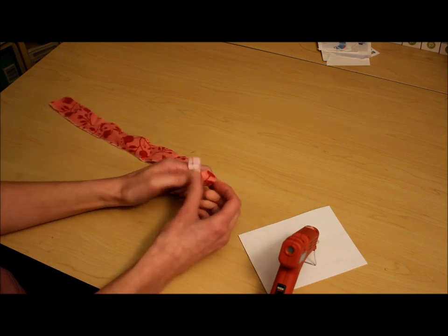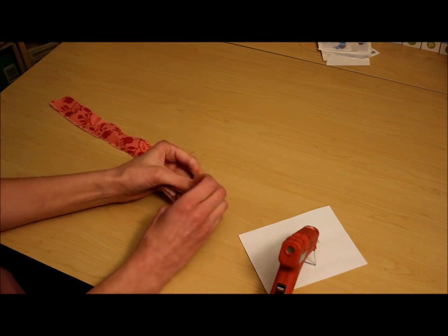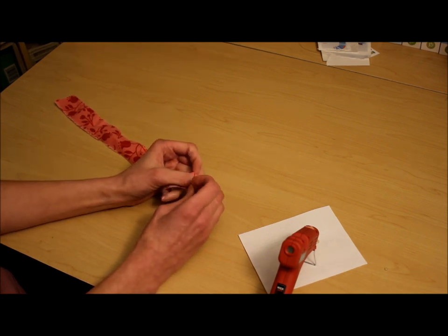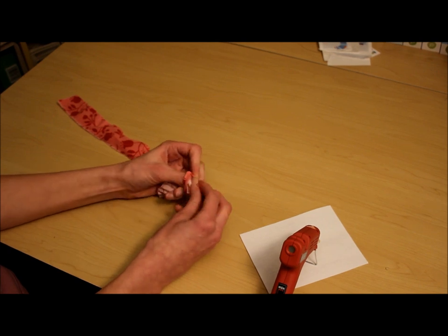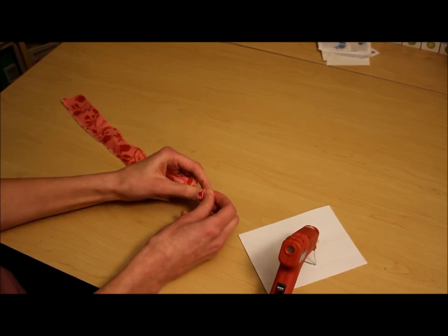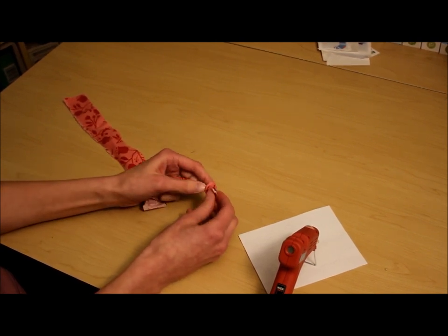First thing you do is tie a knot in one end and scoot the knot toward the very end. That's going to be the center of the rose.